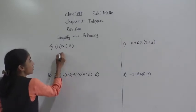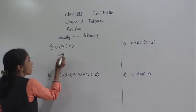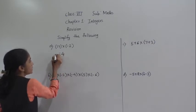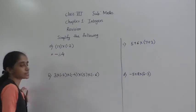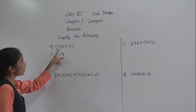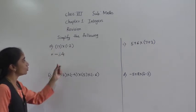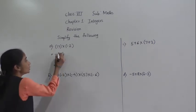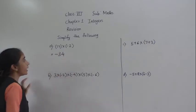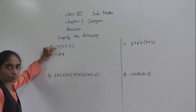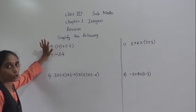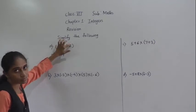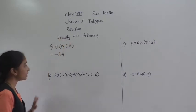So 17 into 2 — the first multiplication 17 into 2 is 34. The answer is minus 34. We have learnt these rules of multiplication: one number is negative, another number is positive, then their product will be negative. Or one number is positive, another number is negative, then their product will also be negative.